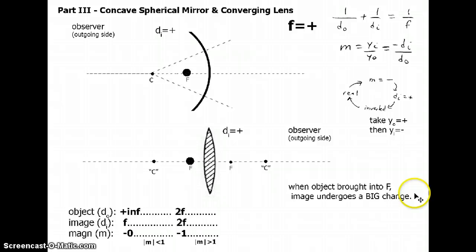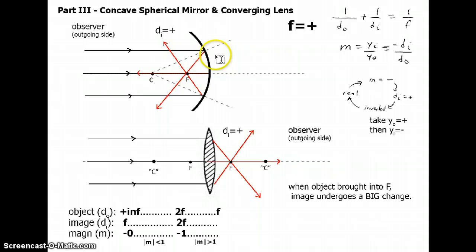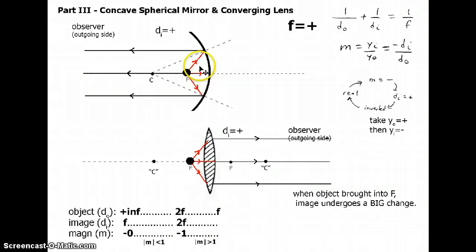Now we have a big change when the object is brought into F. When light came in from very far away it was parallel and got channeled through the focus. But now the object is at the focus, so it sends light out toward the mirror and the light bounces back parallel. We've broken the ability of the mirror and lens to channel light into a real image. The light is so divergent coming off the object that the best that can happen is for it to be channeled so it's no longer diverging — it goes out parallel. Diverging light can't be channeled anymore; the image actually never can be formed.